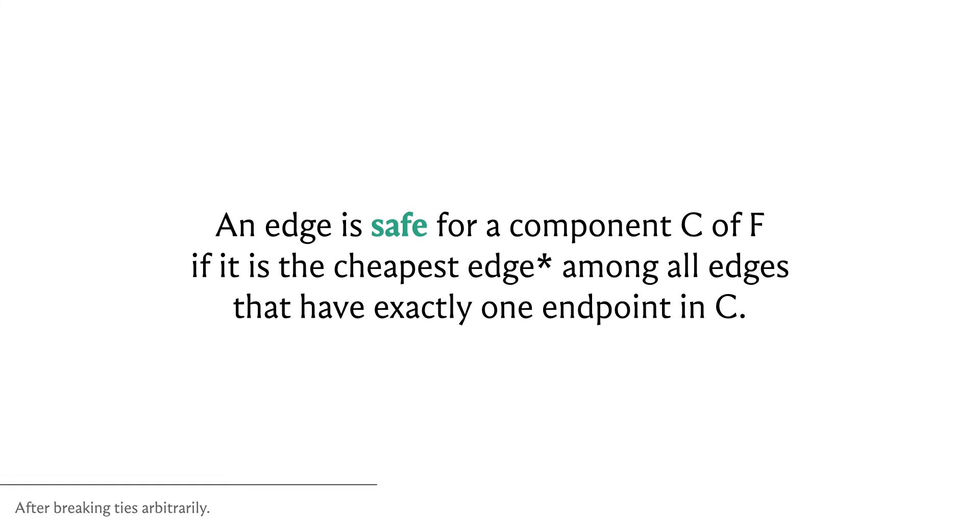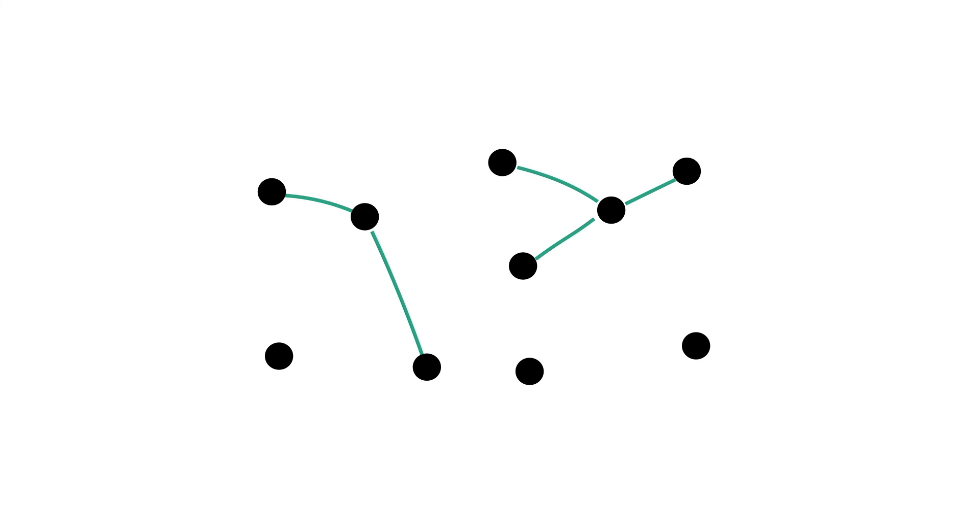On the other hand, we talk about an edge being safe for a particular component if it is the cheapest edge among all the edges that have exactly one endpoint in that component. We do want to talk about uniquely identifying cheapest edges, so if there are multiple cheapest edges that are getting out of a component, then we'll have some previously agreed upon tie-breaking mechanism.